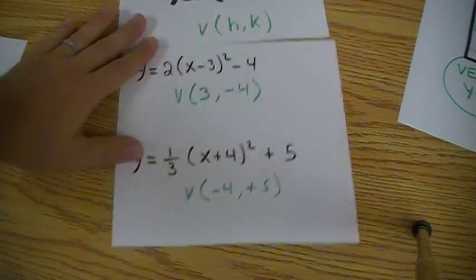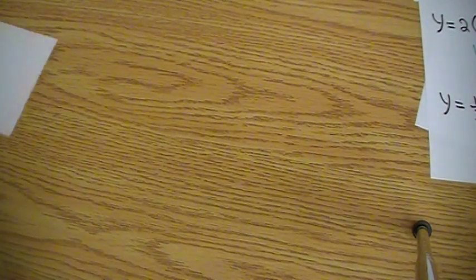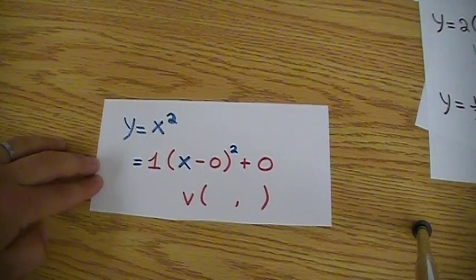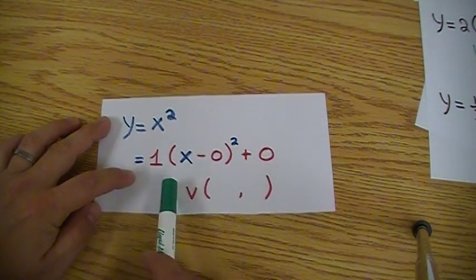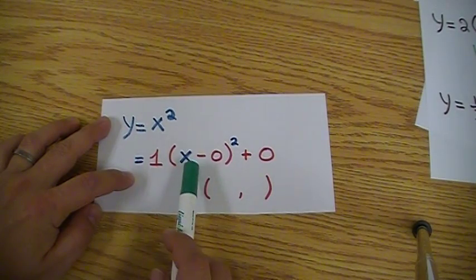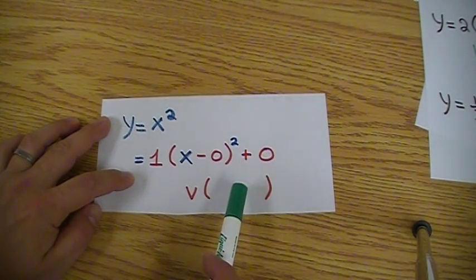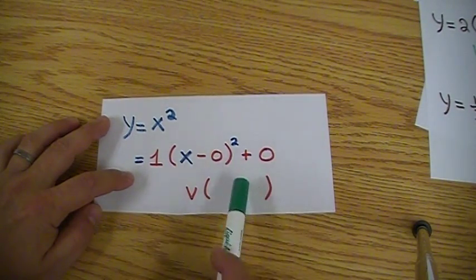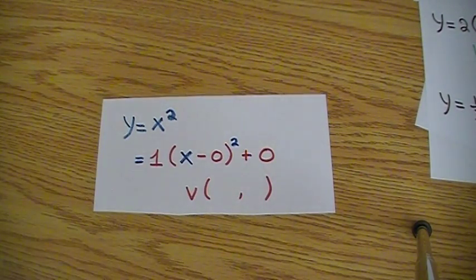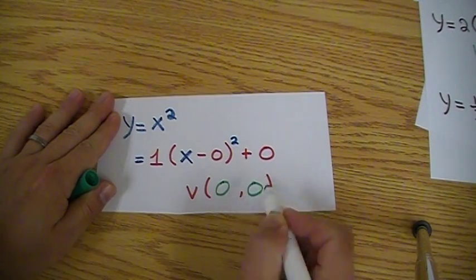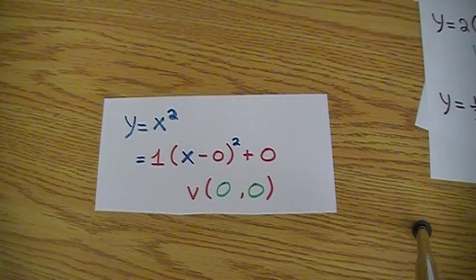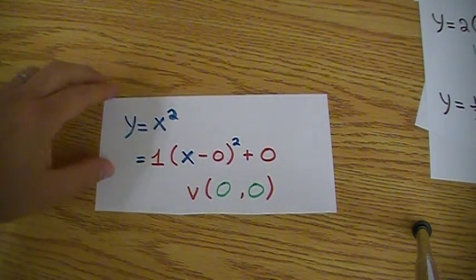Now that we know how to find the vertex, there are some trickier functions to figure out the vertex. For example, x squared. We can rewrite that x squared is like 1 bracket (x minus 0) squared plus 0. We wouldn't do this, but essentially you can see how this value gives us a vertex. This function gives us a vertex of 0 and 0, and x squared starts at 0 and 0.